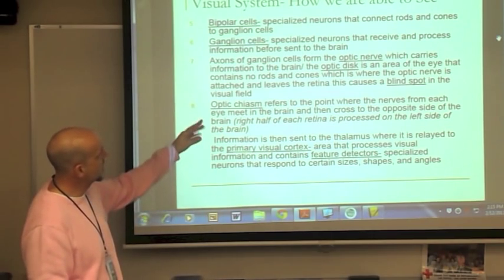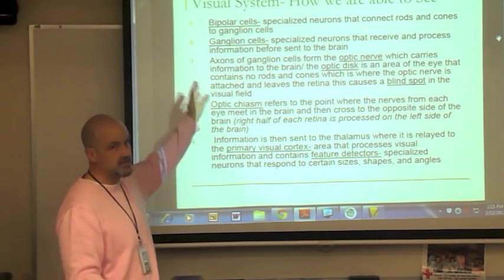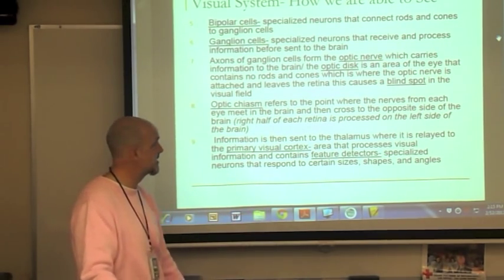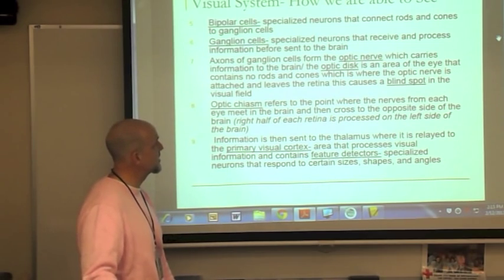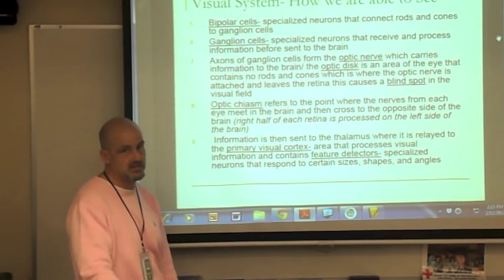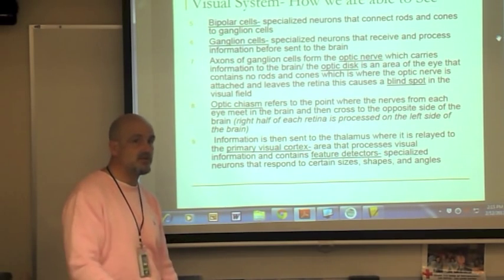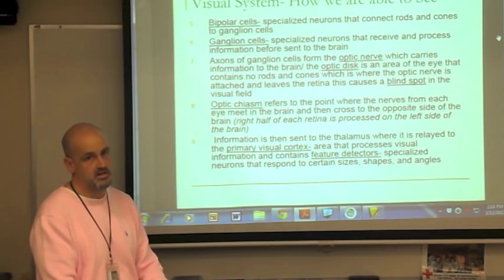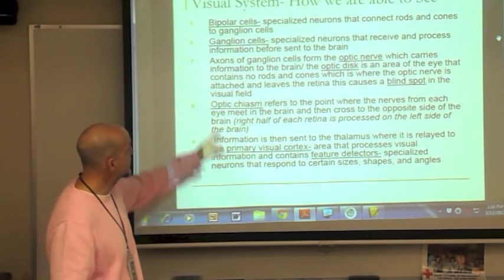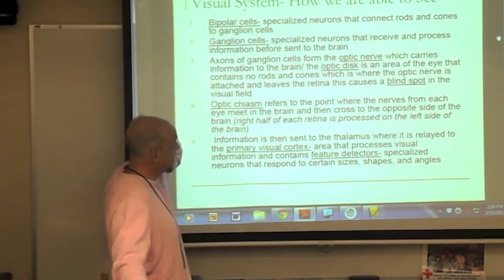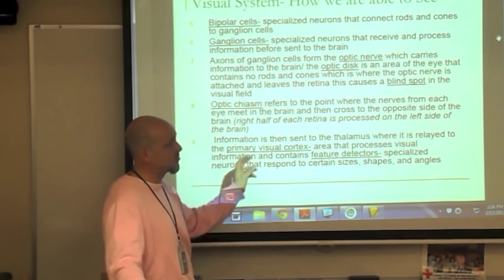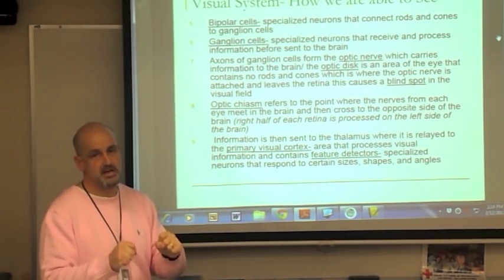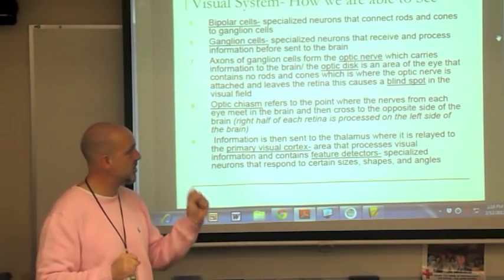Bipolar cells are specialized neurons that connect the rods and cones to the ganglion cells — they act like a bridge. Ganglion cells receive and process information before it's sent to the brain. The axons of the ganglion cells form the optic nerve, which is a bundle of axons — like strings forming a rope — that carries information to the brain.